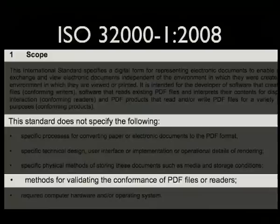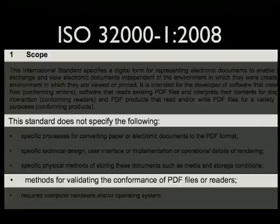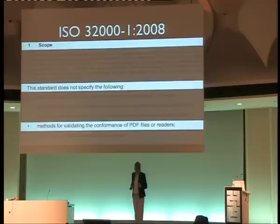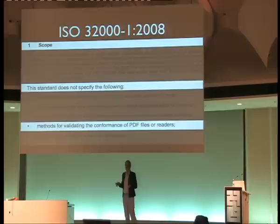Adobe submitted the PDF 1.7 spec to the ISO to make it an official standard — it's ISO 32000-1:2008. The reason I did this talk was that sometime last year I actually sat down and read through the entire spec, and the entire time I was like, oh my god, what were they thinking? Right at the very beginning of the spec, it says that there's nothing in this document for validating the conformance of a PDF file or a reader to the spec.